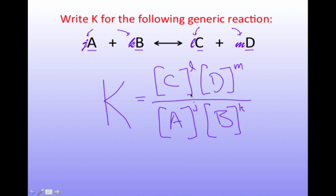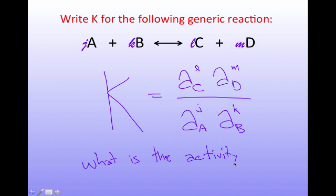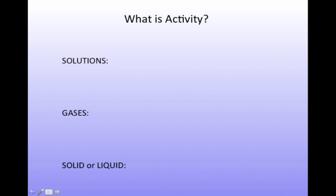Now I've written it here in terms of concentrations, but really I need to be a little more careful. So the subtlety that we have is we write the equilibrium constant in terms of something we call an activity. So let me do that. We have K is then the activity of C raised to the power L times the activity of D raised to the power M over the activity of A raised to the power J and the activity of B raised to the power K. And then the question is, what in the world is the activity?